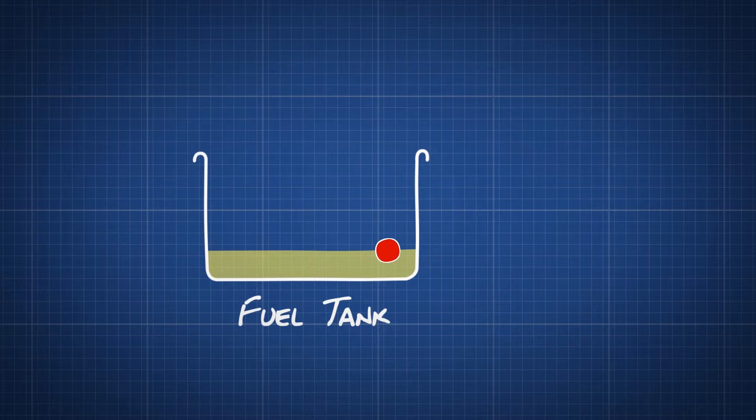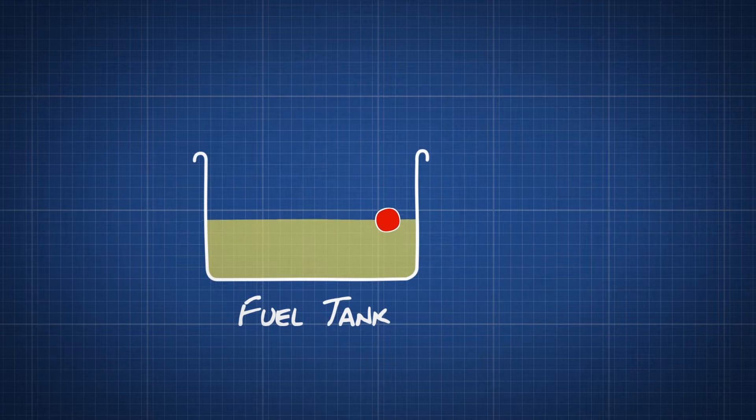A small float sits in your car's fuel tank. The float bobs on top of the fuel. The higher the level, the higher it floats.